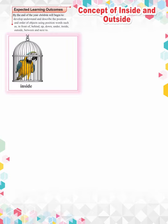Look at these two pictures. In picture 1, the parrot is inside the cage. The arrow shows that if the parrot comes out of the cage, it will be outside the cage.